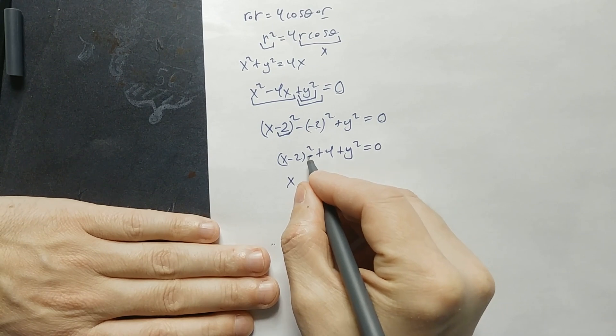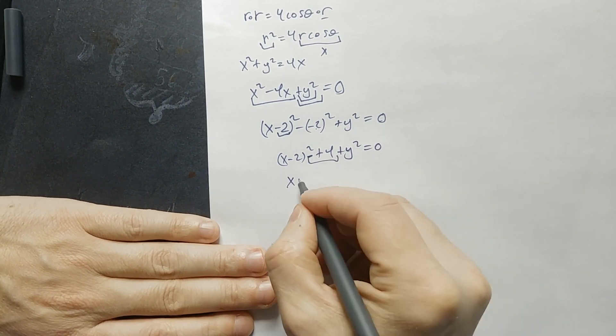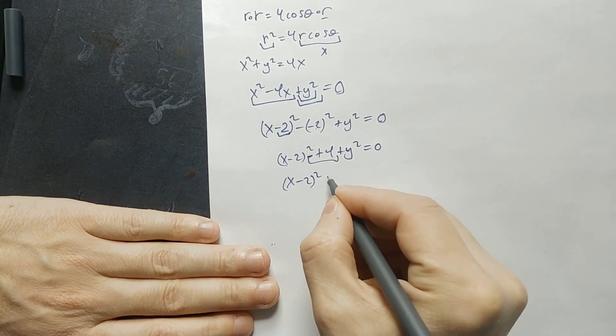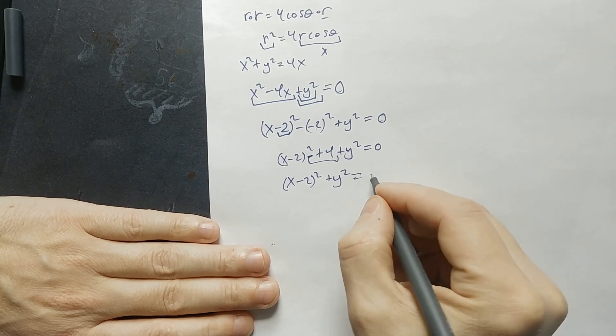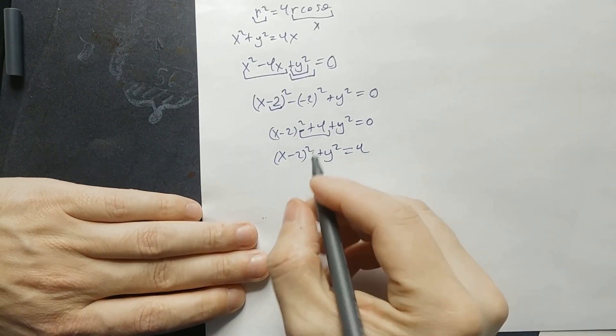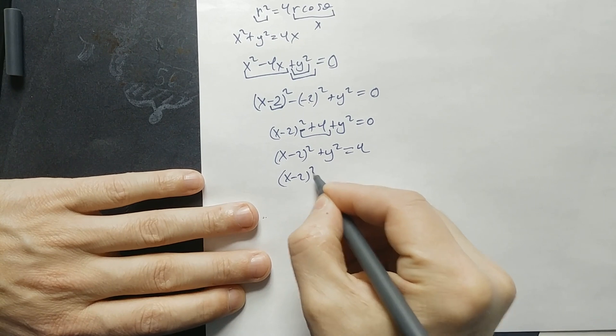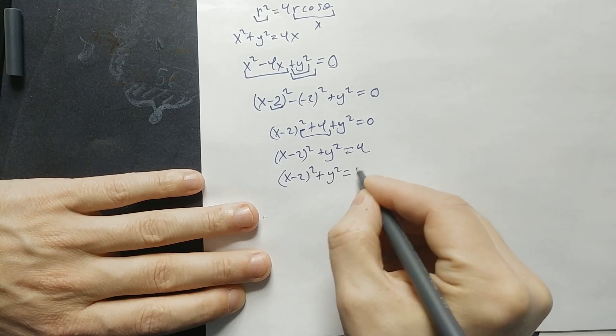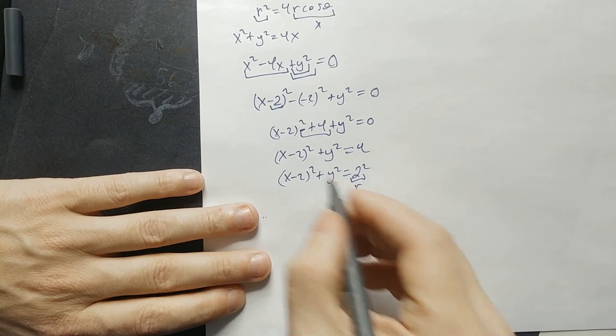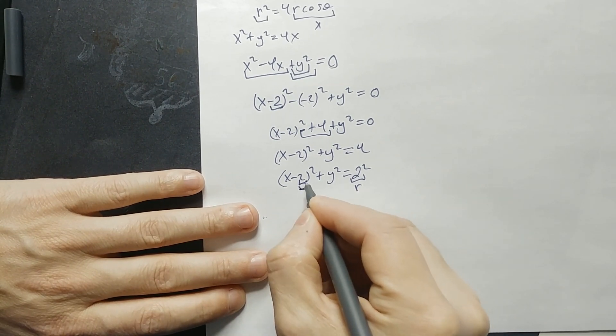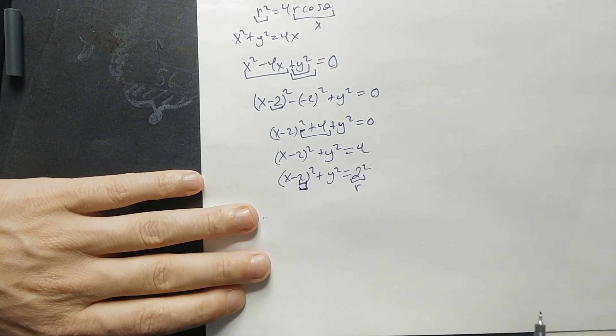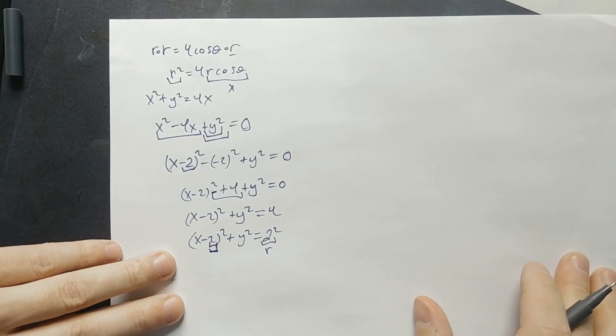Now move everything to the other side. Specifically, move this to this side. So it's x minus 2 squared plus y squared is equal to 4. Now what we have is x minus 2 squared plus y squared equals 2 squared. This here is the radius of a circle. This number represents the horizontal shift of the circle. So now let's make a quick graph.